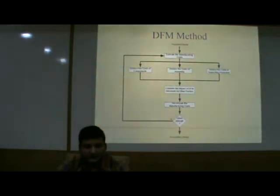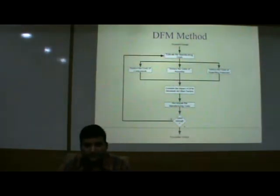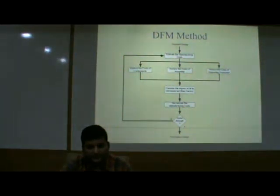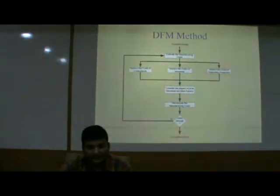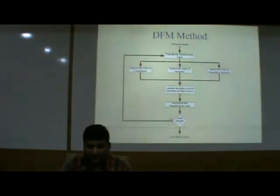Now we will discuss the methods included in DFM. The procedure begins with the proposed design. Next, estimate the manufacturing cost. Cost is reduced by reducing the cost of components, reducing the cost of assembly, and reducing the cost of supporting production. After that, consider the impact of DFM decisions on other factors, then recompute the manufacturing cost. If it is acceptable, proceed; otherwise, return to the first step.